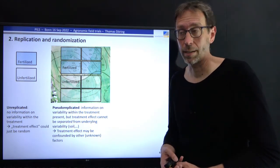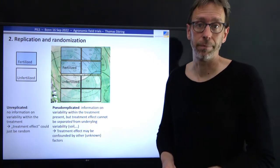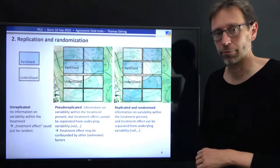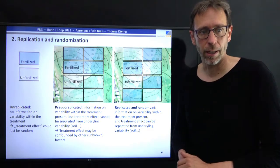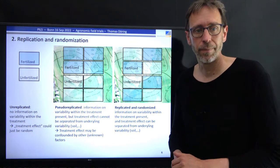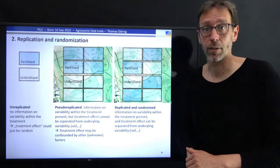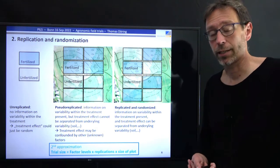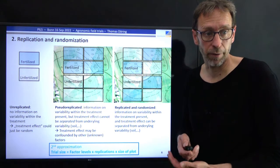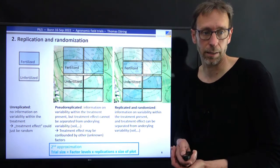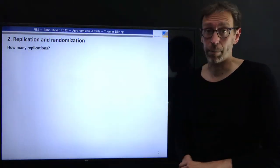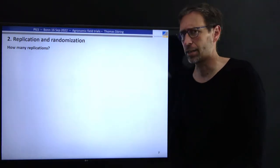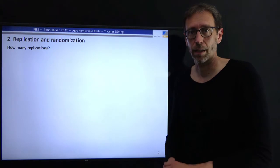Therefore, in field trials we normally randomize our plots. In a replicated and randomized situation, there is information on variability within the treatment, and the treatment effect can be separated from the underlying soil variability. In a second approximation, the trial size is the product of the number of factor levels, the number of replications, and the size of each plot.